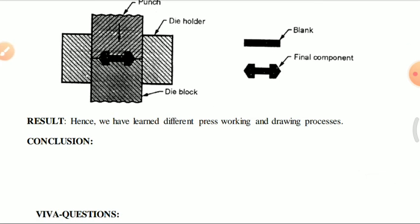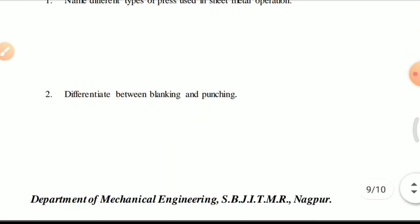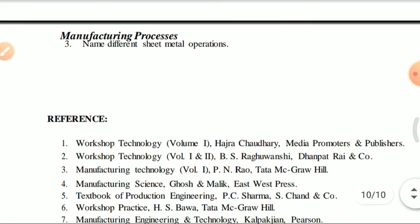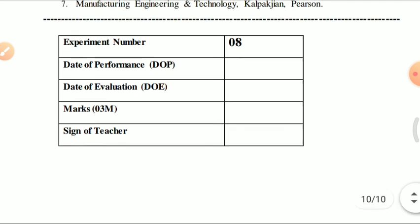With these operations we have completed our 9th experiment. We have learned different press working operations and drawing processes. For your conclusion, write what you have learned, and record the date of performance — you will find this information on Google Classroom. Thank you.